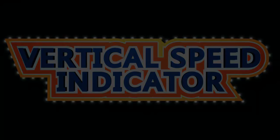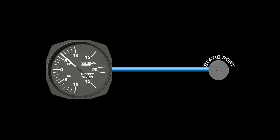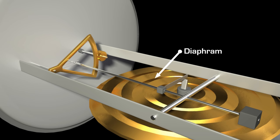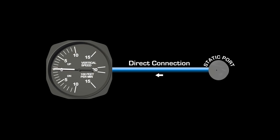Another instrument that uses only the information from the static port is the vertical speed indicator, more commonly called the VSI. The VSI measures the vertical speed of the aircraft in terms of feet per minute. This is accomplished by comparing the current pressure of the air with the pressure of the air from a few seconds ago. Inside the VSI is a diaphragm connected to some mechanical linkages that move the needles on the face of the instrument.